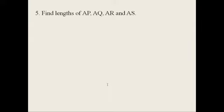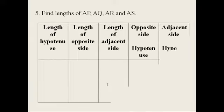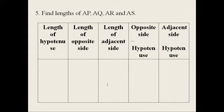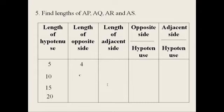Find the lengths of AP, AQ, AR, and AS by using the Pythagorean theorem. Length of hypotenuse: 5 cm, 10 cm, 15 cm, 20 cm. Length of the opposite side: 4 cm, 8 cm, 12 cm, 16 cm. Length of the adjacent sides: 3 cm, 6 cm, 9 cm, 12 cm. I will show you how to set that up.